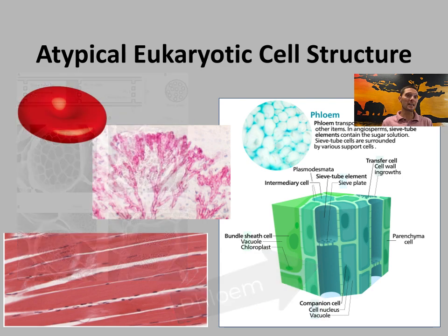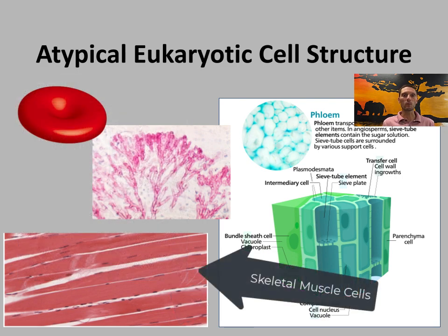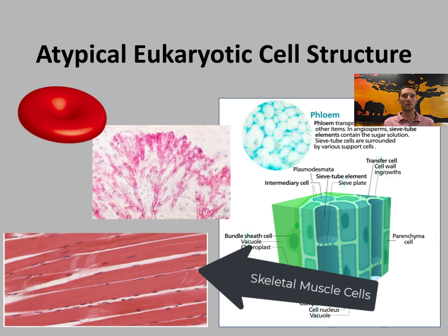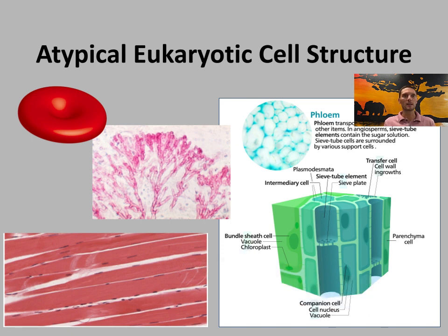A third exception is skeletal muscle, where multiple cells fuse together to form muscle fibers. As a result, what is an individual cell has multiple nuclei because multiple cells have fused into one.